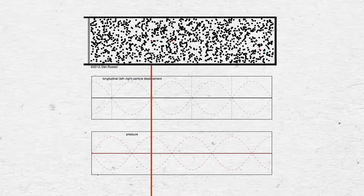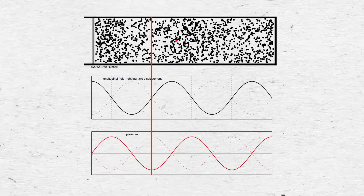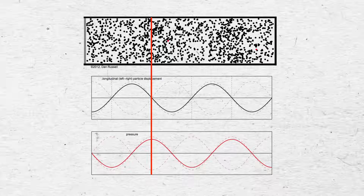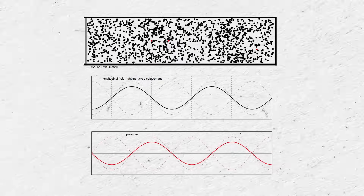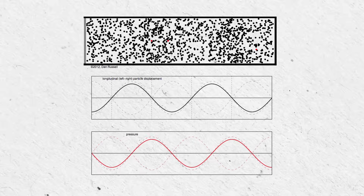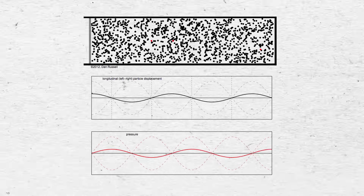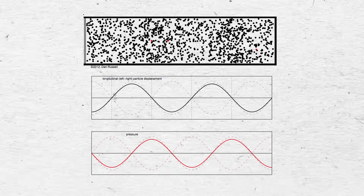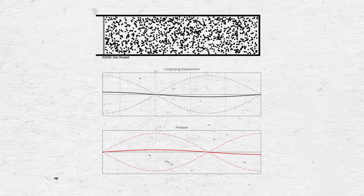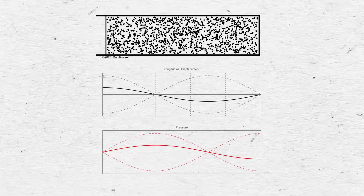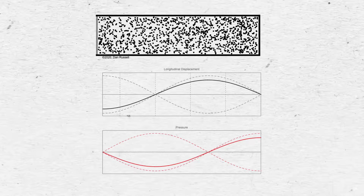However, the stationary dot is aligned with an antinode on the pressure graph. In fact, all of the points of maximum pressure line up with points of minimum displacement, and all of the points of maximum displacement line up with points of minimum pressure at this particular frequency. We can see this at various other frequencies too — maximum displacement, minimum pressure; minimum displacement, maximum pressure.